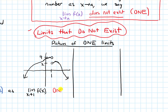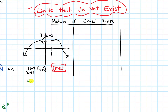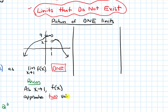So this limit is DNE. The reason is that as x approaches 1, f of x — my y values, my outputs — approaches both 4 and 2, not just one value.